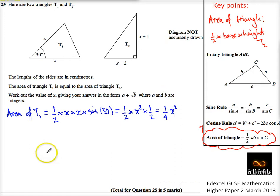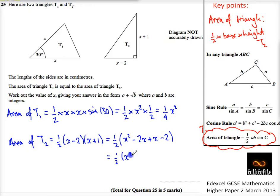Or you could write it x squared over 4. Let's find out what the area of T2 is. Well, we're just going to do a half of the base times the height. So we're going to do a half of the base, which is that, times by the height, which is that. So that's a half. We can expand double brackets. That's x squared minus 2x plus x minus 2, which is a half of x squared minus x minus 2.